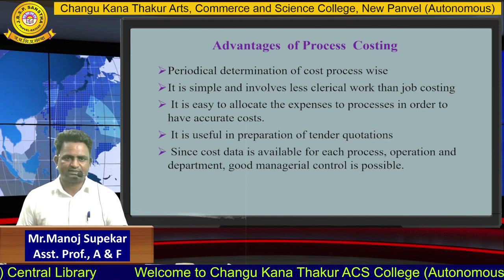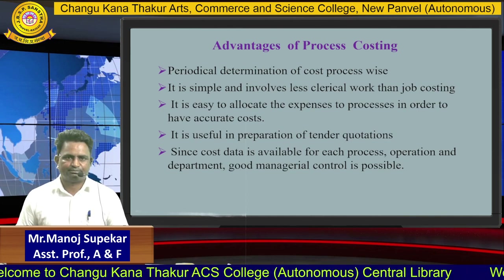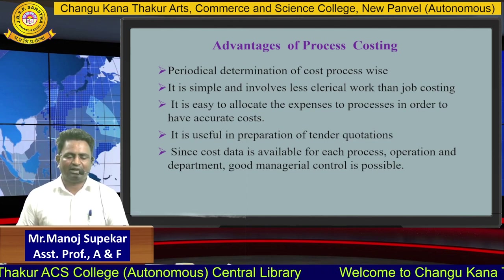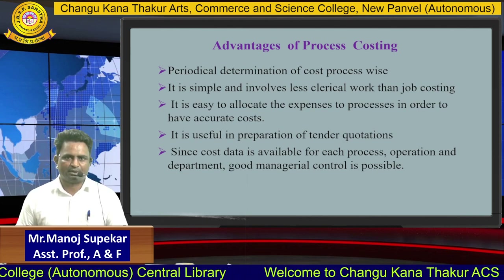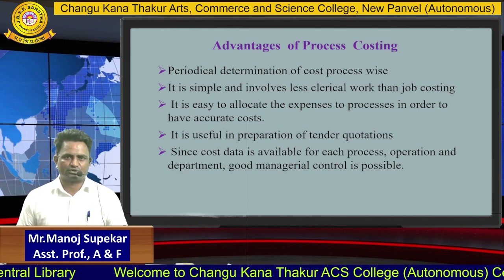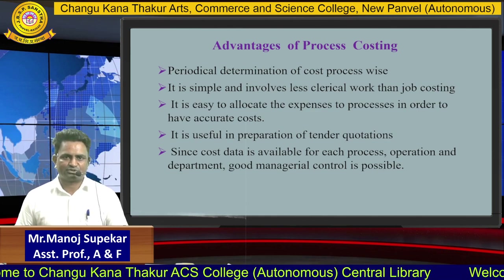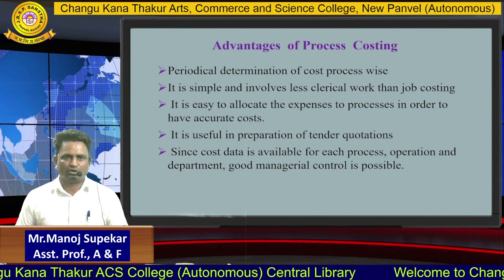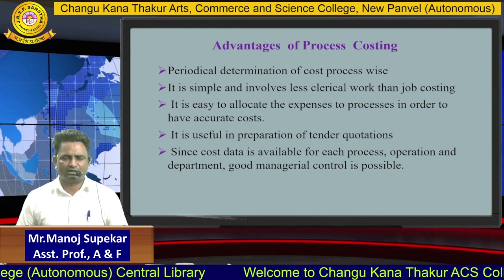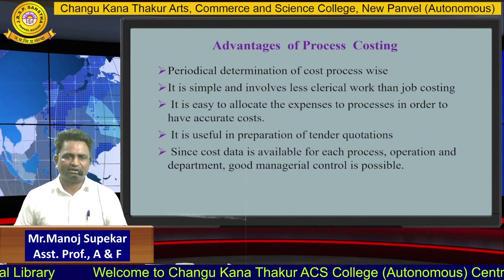The advantage of process costing is to find out the cost of each product with very little critical work, as well as to find out the accurate value of each product. It is also useful for the preparation of tender quotations — this is an important benefit. While finalizing and filling tender documents, process costing plays an initiative role, and organizations are always ready to fill tenders with respect to other organizations. These are the main important advantages of process costing.